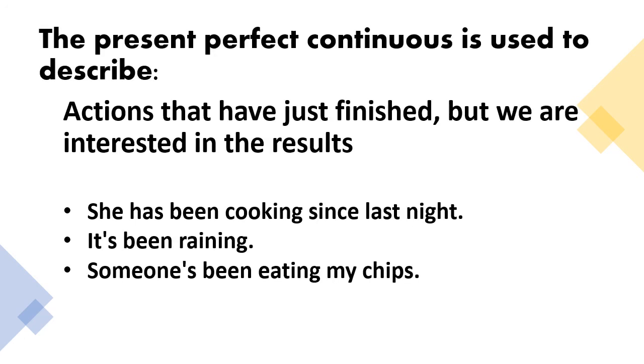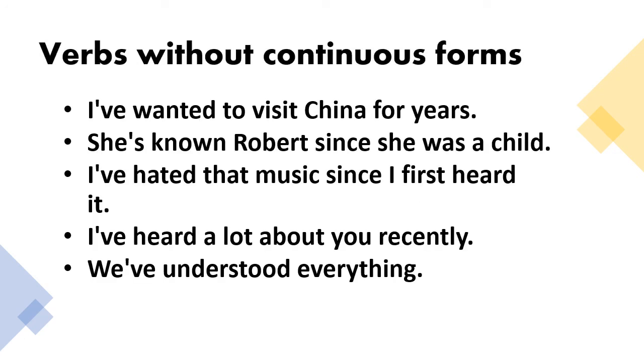Present perfect continuous is also used to describe actions that have just finished but we are interested in results. For example, she has been cooking since last night. It's been raining. Someone's been eating my chips. There are also verbs without continuous forms such as I've wanted to visit China for years. She's known Robert since she was a child. I've hated that music since I first heard it. I've heard a lot about you recently. And we've understood everything.